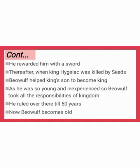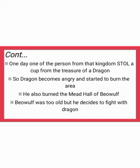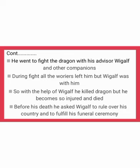His uncle rewarded him with a sword. Thereafter, when King Higlac was killed by the Swedes, Beowulf helped his son become king. But his son was young and inexperienced, so Beowulf took all responsibilities of the kingdom and ruled for fifty years. When he became old and weak, one of his people stole a cup from the treasure of a dragon, a powerful serpent. The dragon became angry and started to burn their area, including Beowulf's mead hall.